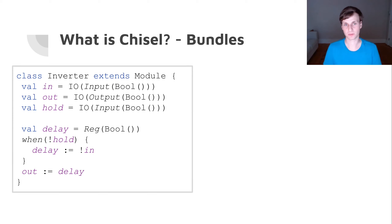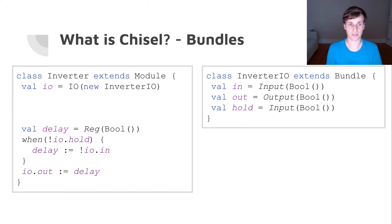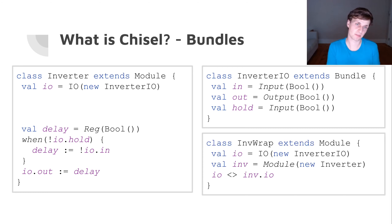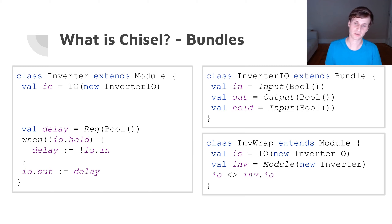Now this looks very similar to things you can do in Verilog. So what's actually new in Chisel? Well, one thing you can do is create a bundle — kind of like a record but with directional signals — so instead of creating every port individually, we can create one single I/O port that has all three signals in it. We can also create a wrapper module around our inverter which has the same I/O, instantiates the inverter, and uses a powerful Chisel construct to connect multiple signals.